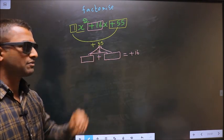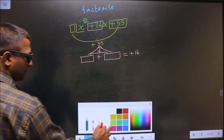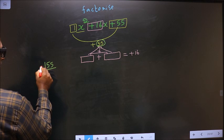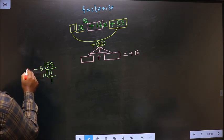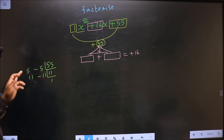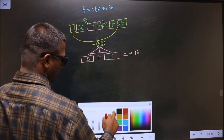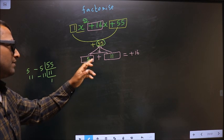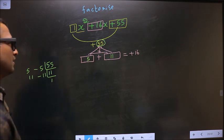To get those two numbers, we should take factors of 55. Starting with 5 and 11. So the two numbers are 5 and 11: 5 plus 11 is 16, and 5 into 11 is 55. Now you adjust the signs — plus 5 and plus 11 gives plus 16, and plus 5 into plus 11 gives plus 55. Signs are also adjusted.